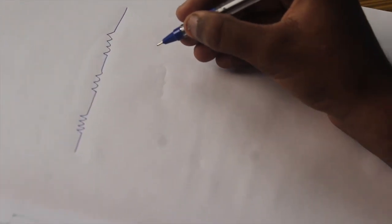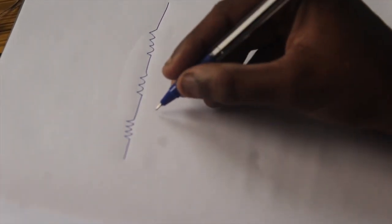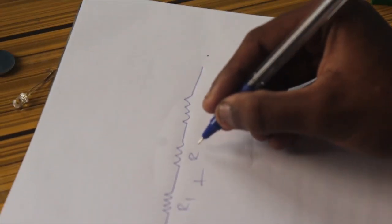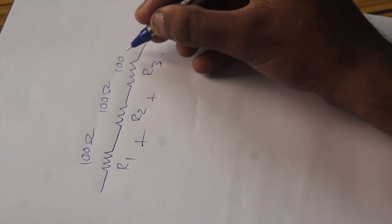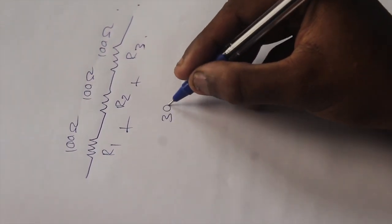When we add the resistance in series, you will get the net sum as the output. This is resistor R1, this is R2, and this is R3, each resistance value is 100 Ohm. When you add these three resistors, you will get an output of 300 Ohm.